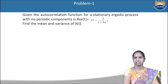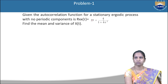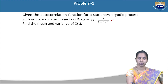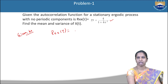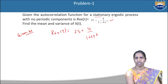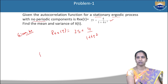Now let us see some problems on the autocorrelation function. The given problem: given the autocorrelation function for a stationary ergodic process with no periodic components is R_xx(τ) = 25 + 4/(1 + 6τ²). Find the mean and variance of the random process x(t). The given data: R_xx(τ) = 25 + 4/(1 + 6τ²), and the process is stationary, ergodic, and has no periodic components.